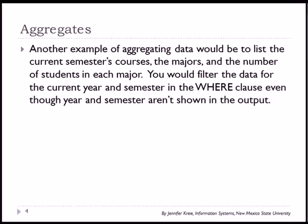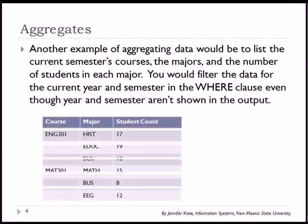Another example of aggregating data would be to list the current semester's courses, the majors of the students in those courses, and the number of students in those majors. You would filter the data for the current year and semester in the WHERE clause, even though the year and semester are not shown in the output.